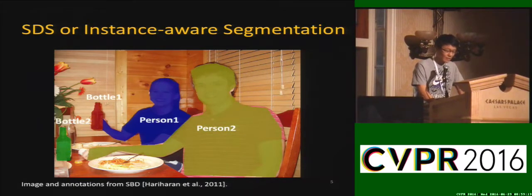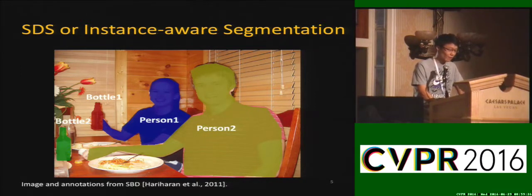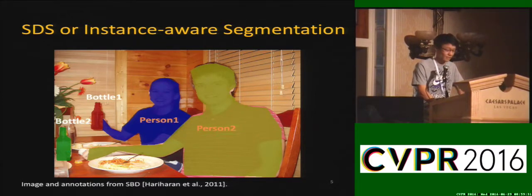Simultaneous detection and segmentation, also known as instance-aware semantic segmentation, is a relatively new direction to generate pixel-level masks for each object instance. Here, the two persons are separated.